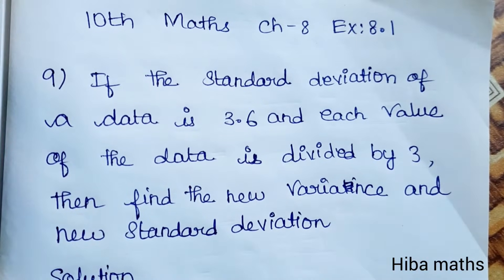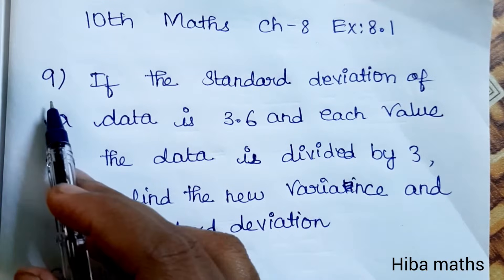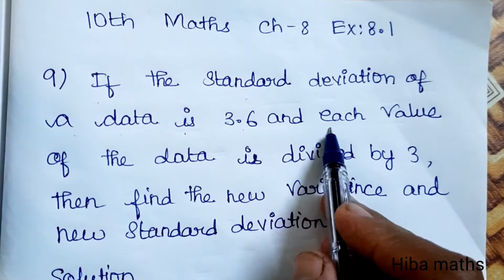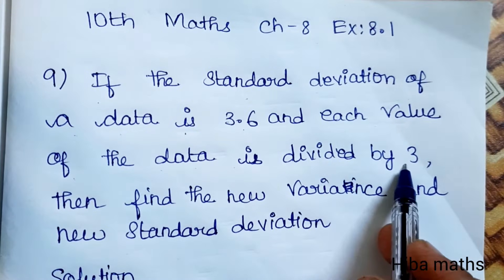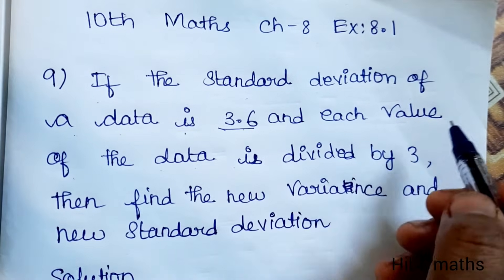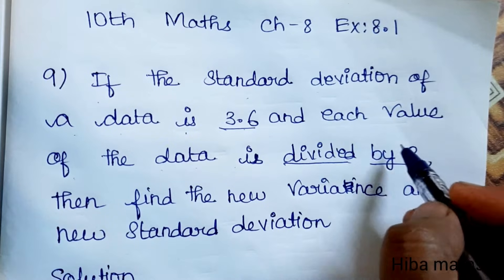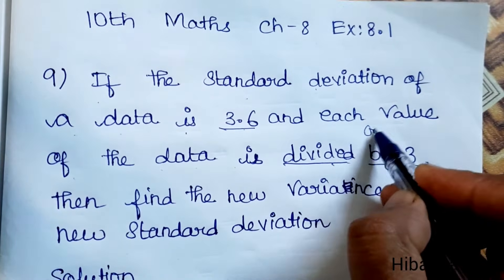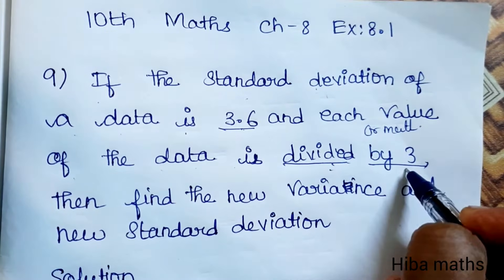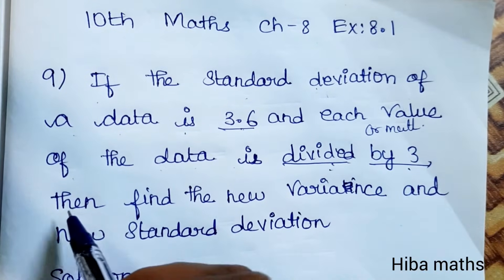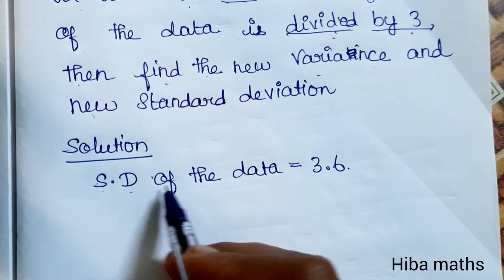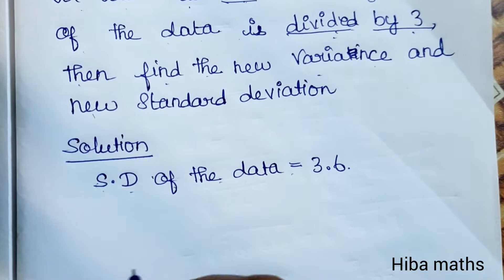Hello students, welcome to Class 10 Mathematics, Chapter 8, Exercise 8.1, Question 9. If the standard deviation of a data is 3.6 and each value of the data is divided by 3, then find the new variance and new standard deviation. When each value is divided by 3, the new standard deviation is also divided by 3.